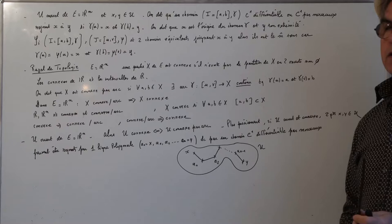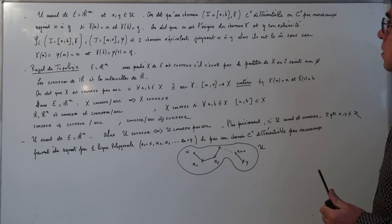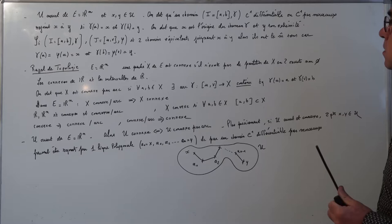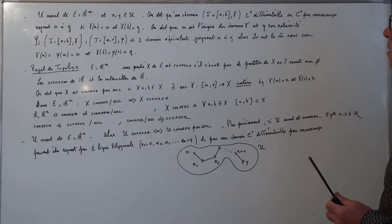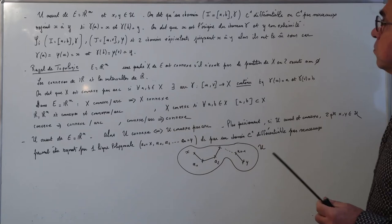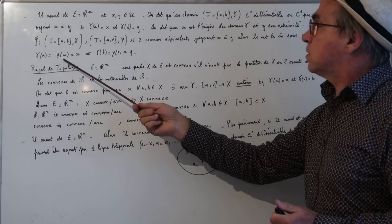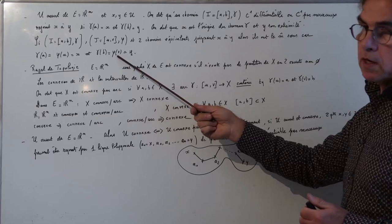Soit U un ouvert de E = Rⁿ et X, Y appartenant à U. On dit qu'un chemin C1 ou C1-par-morceaux rejoint X à Y si γ(A) = X et γ(B) = Y. On dit que X est l'origine du chemin γ et Y son extrémité. Si Iγ et Jφ sont deux chemins équivalents rejoignant X à Y, alors ils ont le même sens, car γ(A) = φ(U) = X et γ(B) = φ(V) = Y.